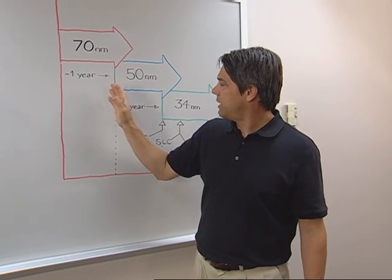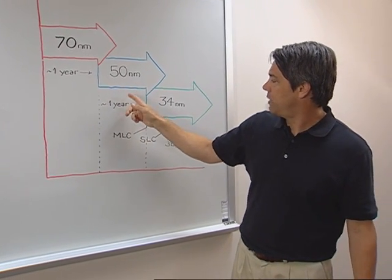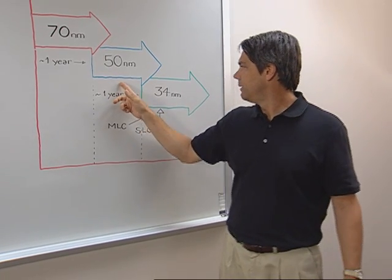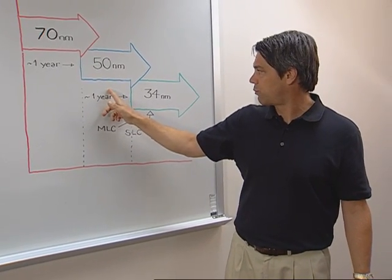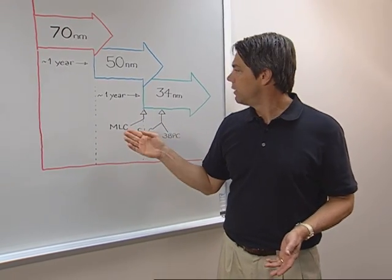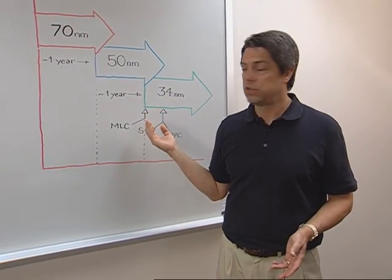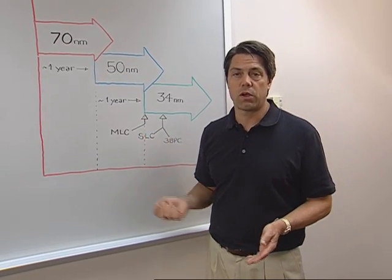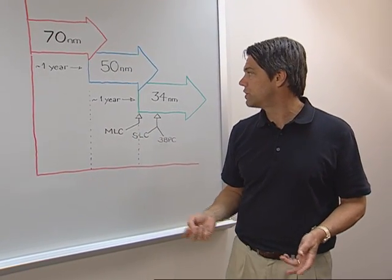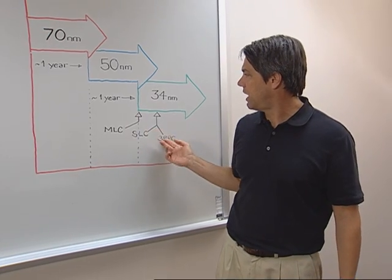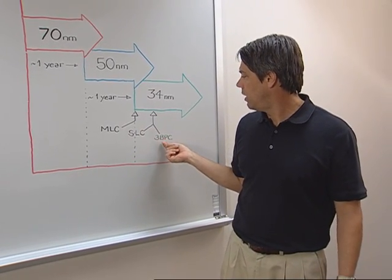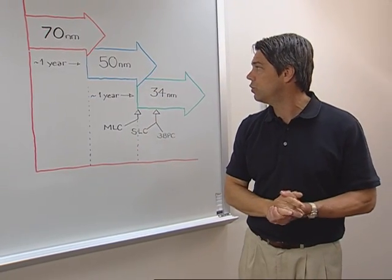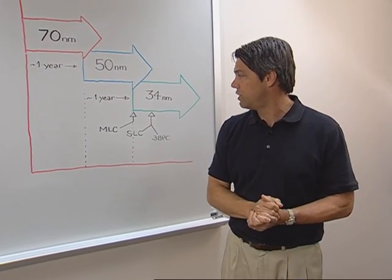So, looking back at history, for example, if we would have had a 3-bit per cell on 50 nanometer, it would have come midway in the life of the process, and then the 34 nanometer is right behind it. You're always going to get lower cost going to the next process node, and you're going to do so without compromising performance or endurance. So it wouldn't make sense to have a 3-bit per cell process node on a shrink path like this where you're able to introduce a new process node every year.